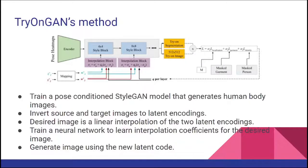They start by training a pose-conditioned StyleGAN model that generates human body images. After this, they use latent inversion techniques to convert the input images into their latent codes. The key observation is that we can linearly interpolate between two latent codes to get the code for any virtual try-on image we want. For this purpose, they train a neural network to learn the interpolation coefficient, and then use the interpolated latent code to generate a new image. The interpolation block receives two codes obtained after inverting the input images, interpolates between them, and inputs the result into the StyleGAN model to generate the desired output.